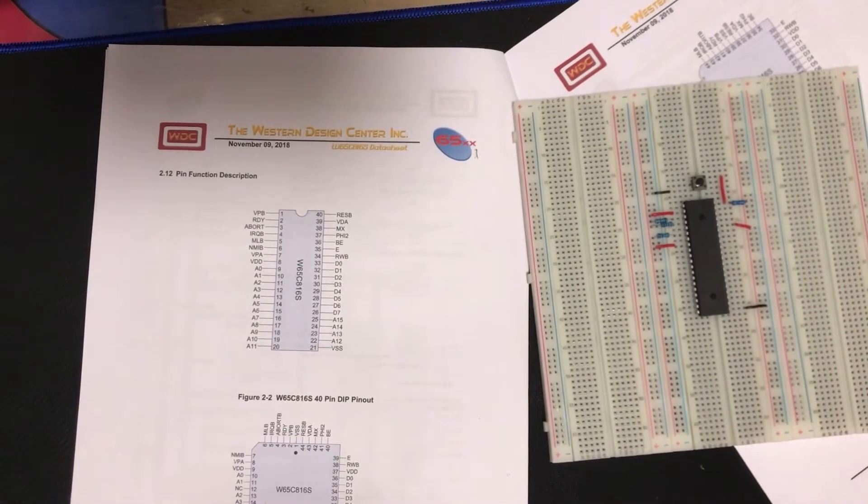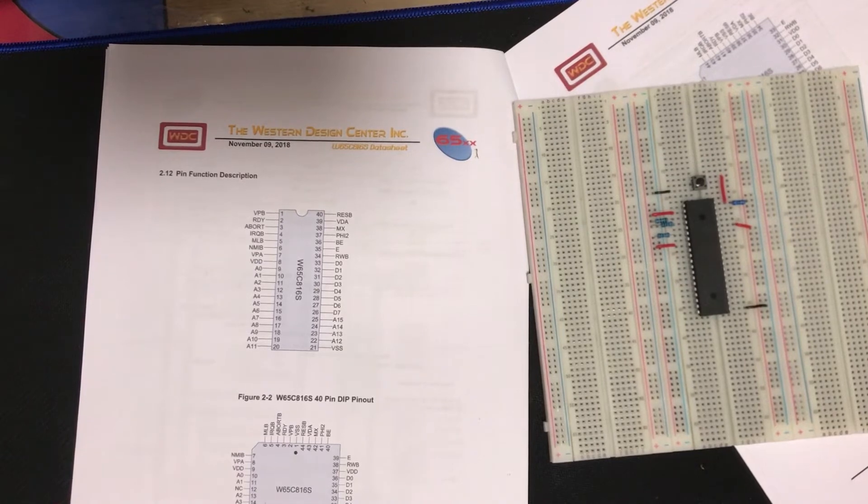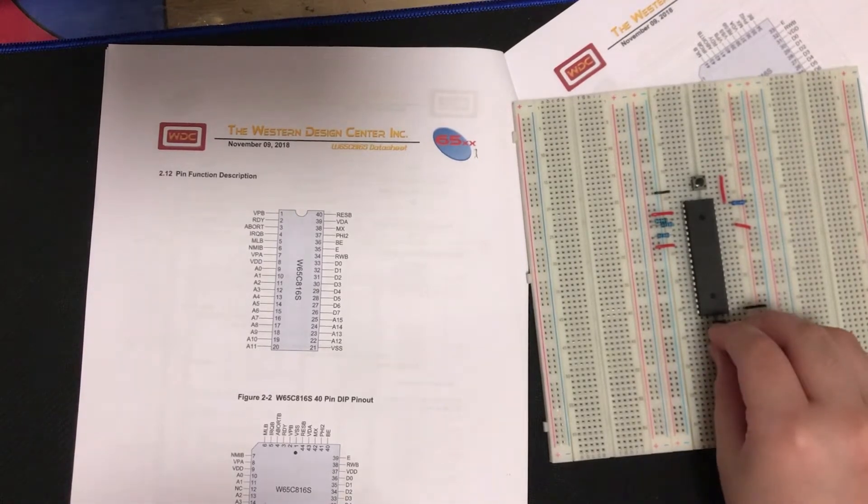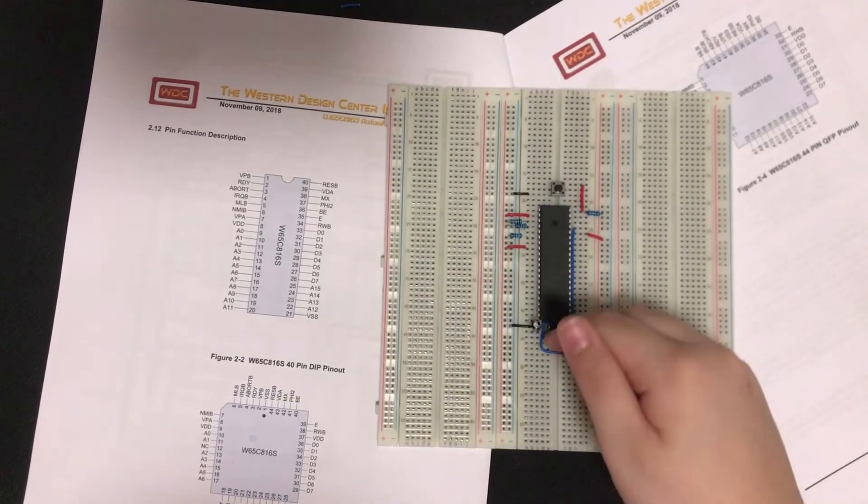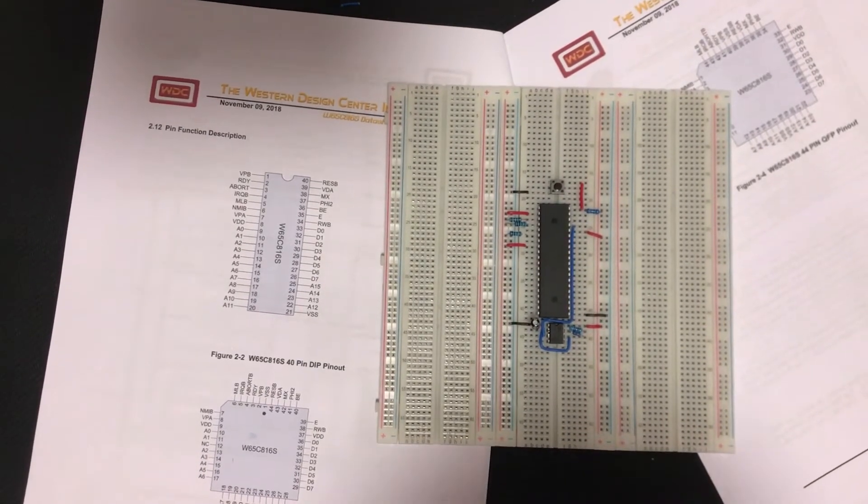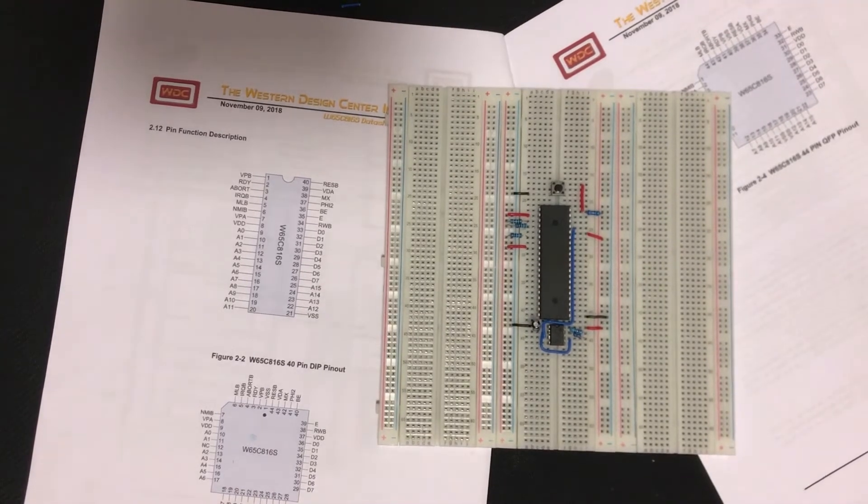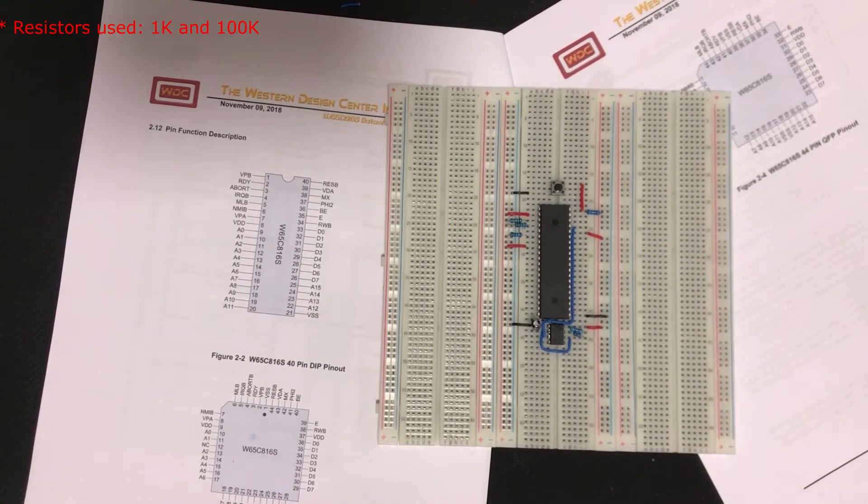We still need to add the clock, which I neglected earlier. We're going to use a 555 timer. Now I've connected the clock input to the clock output of the 555. So now we should have a nice clock that's running on microprocessor. Now we're ready to execute some code.